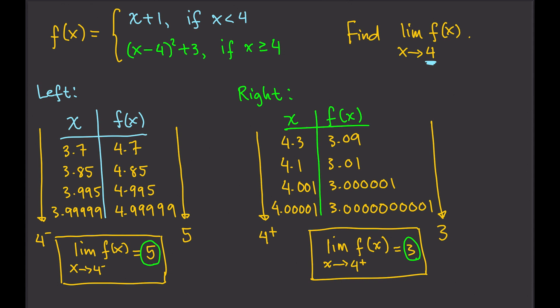And what does that mean? That means that the limit of f of x as x approaches 4 does not exist. And we write that as DNE. It does not exist. Whenever the left limit and the right limit are not the same, we say that the limit of the function does not exist.